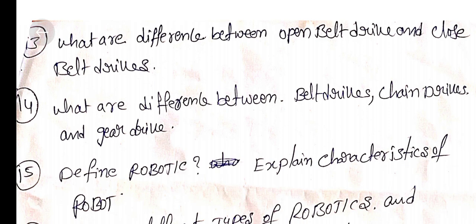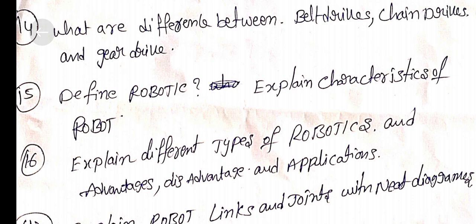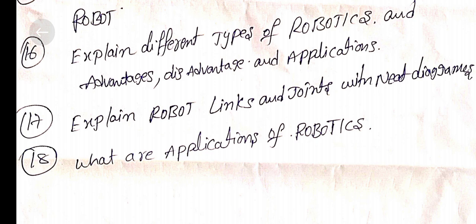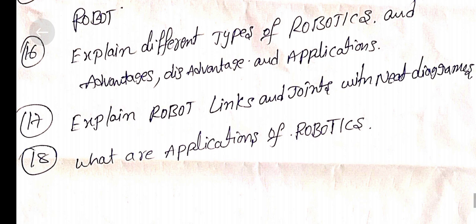Question 14: What are the differences between belt drives, chain drives, and gear drives? Question 15: Define robotics and explain characteristics of robots. Question 16: Explain different types of robotics, their disadvantages, and applications. Question 17: Explain robotic links and joints with neat diagrams. Question 18: What are the applications of robotics?